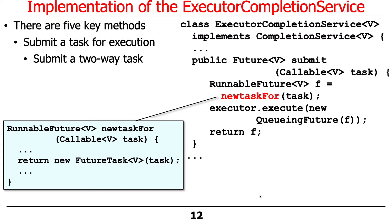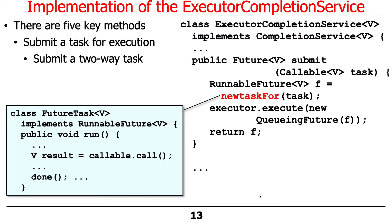FutureTask is something that can be run in the background and can be cancelled if desired. You can also check to see if it's done. The main thing that FutureTask provides is a hook method that gets called back when something has finished. When the run method of this FutureTask is invoked, it will call the call method on the task, get the result, and assuming all goes well, there's a call to a done hook method.